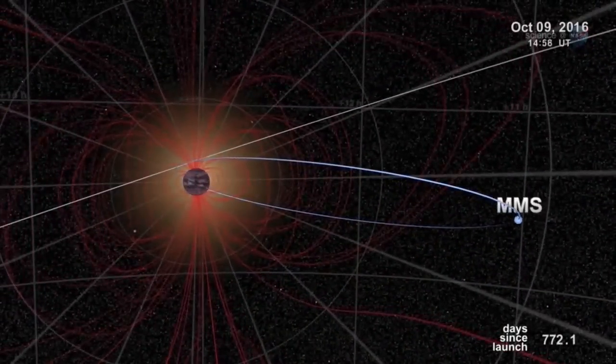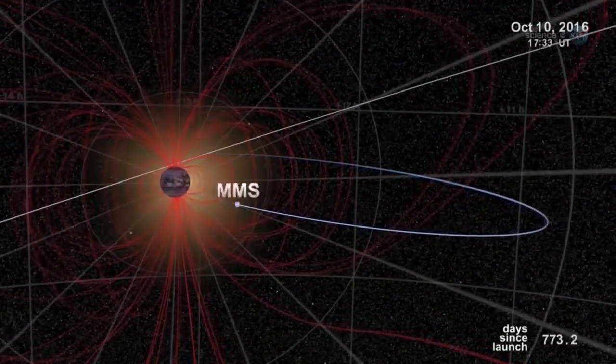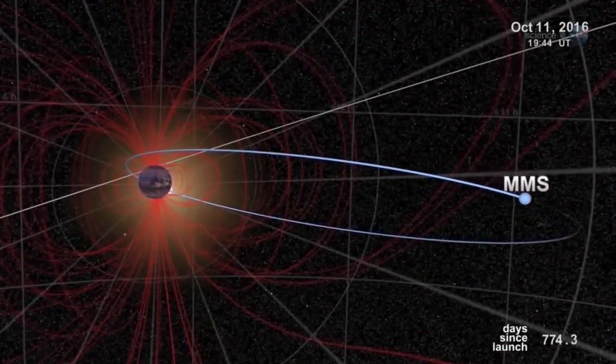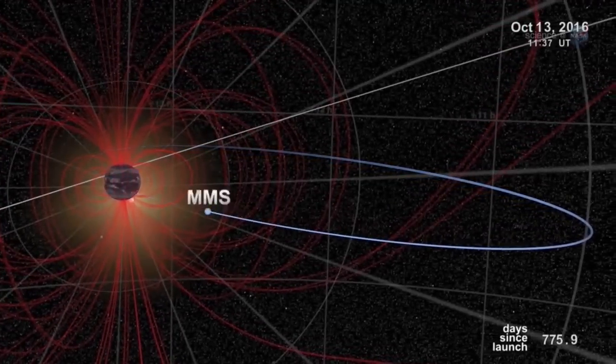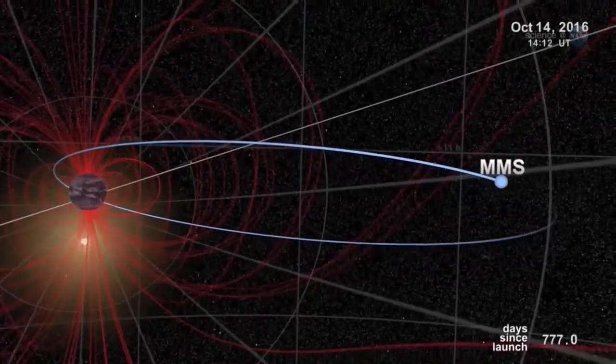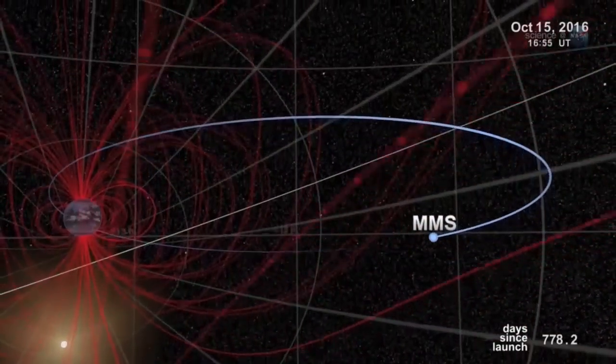Just one problem: finding them. Magnetic portals are invisible, unstable, and elusive. They open and close without warning, and there are no signposts to guide us in, notes Scudder.